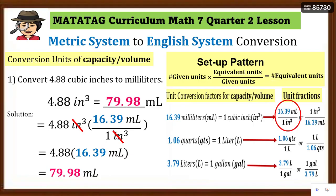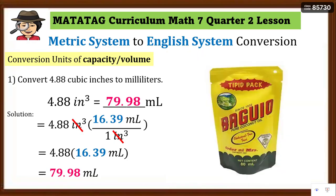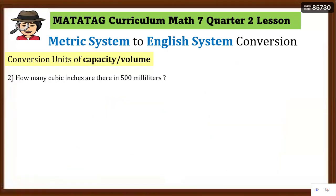So 79.98 ml is equivalent to 4.88 cubic inches. In real life, for example, you buy a tipid pack of Bagu pure coconut oil — the net content or capacity is about 80 ml. When 79.98 is rounded, that approximates to 80 ml, which is our coconut oil.